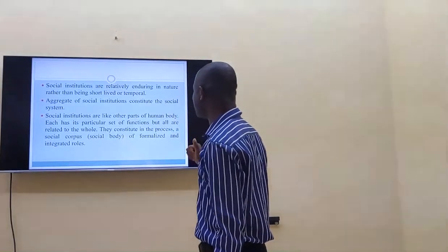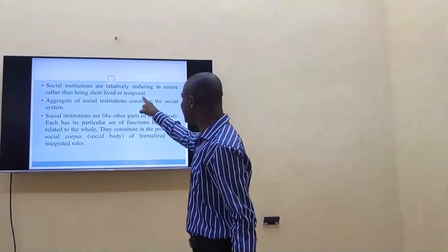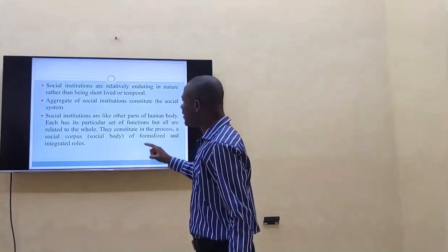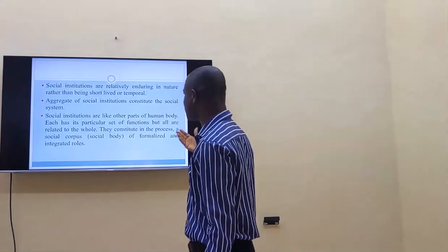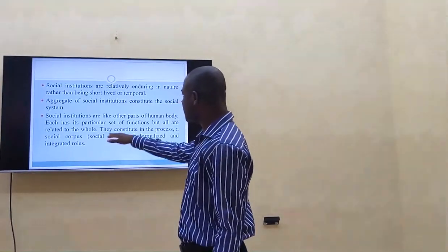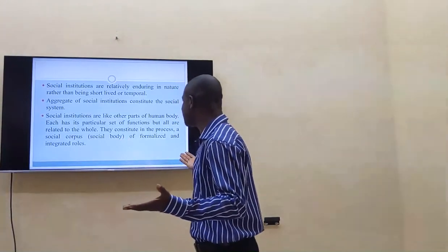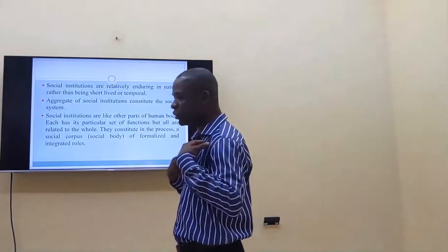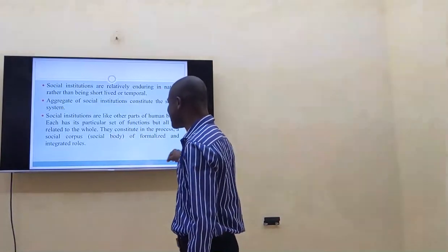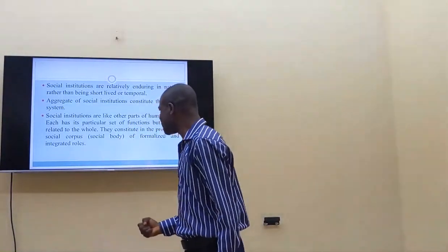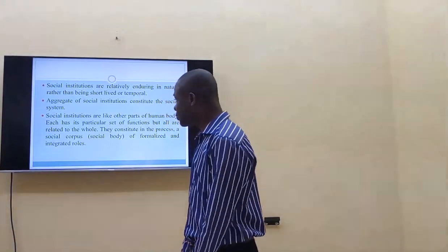Social institutions are relatively enduring — they last. It's not as if they start and then disappear. They are relatively enduring in nature rather than being short-lived or temporary. All social institutions together constitute the social system. Social institutions are like different parts of the human body — each has its particular set of functions, but all are related to the whole. They constitute a social corpus, that is a social body, of formalized and integrated roles.